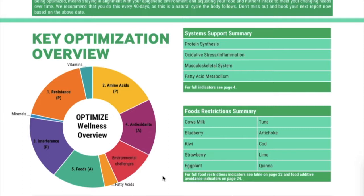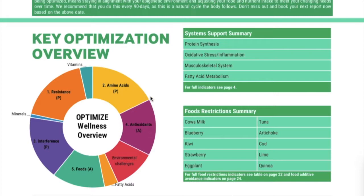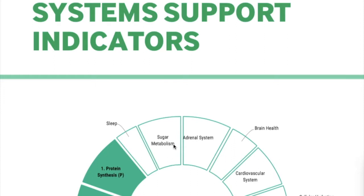You have environment challenge, fatty acid, vitamin, and mineral. The ones outside the circle — mineral in my case, and fatty acid and vitamin are the smallest — which means I don't need them at the moment, my body doesn't request them. I have to focus more on the bigger blocks. Let's go to the next page, page four.